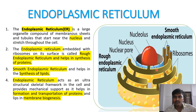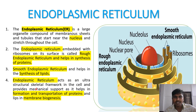The region of endoplasmic reticulum with no ribosomes is called smooth endoplasmic reticulum. Smooth endoplasmic reticulum helps in the synthesis of lipids, and rough endoplasmic reticulum helps in the synthesis of proteins.